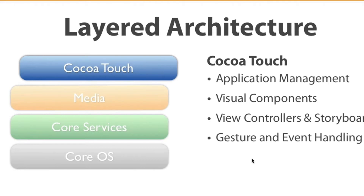In iOS, the architecture is completely layered. It contains an intermediate layer between the application and the hardware, so they do not communicate directly. The lower layers in iOS provide the basic services and the higher layers provide the interface and sophisticated graphics. We will see each and every layer in detail.